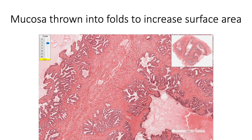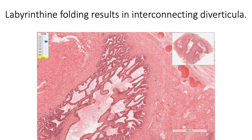The mucosa is thrown into primary, secondary, and tertiary mucosal folds to increase the surface area. Labyrinthine folding of this mucosa results in the lumen showing extensions appearing as irregular interconnecting diverticula of the lumen.